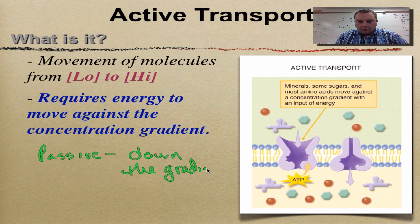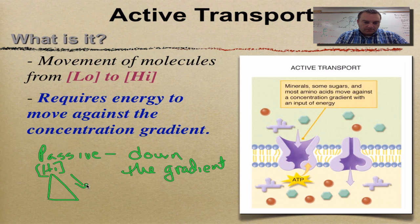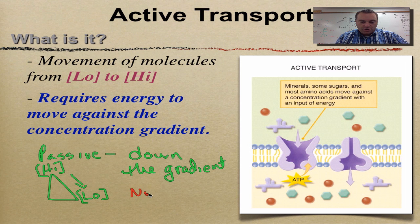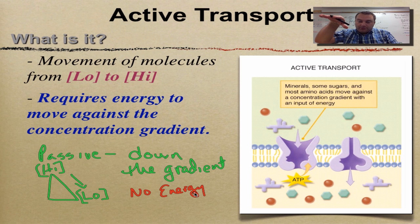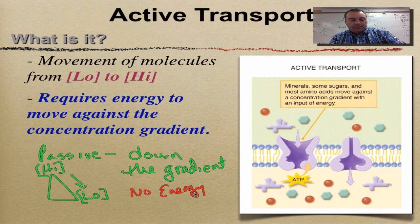Remember, gradient is a word that means hill. So you're going from an area of high concentration — remember brackets mean concentration — to an area of low concentration. The most important part of this was it required no energy. It just happens naturally, just like when you're going on a sled down a hill in the winter time, until you eventually even out and slow down. That's what passive transport is.